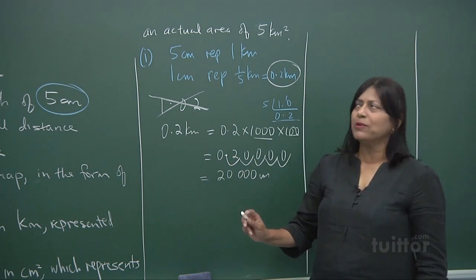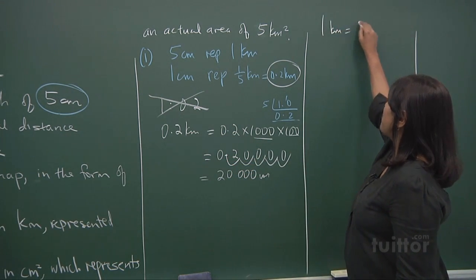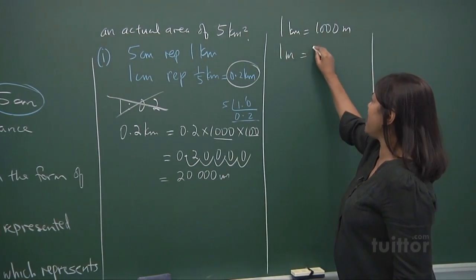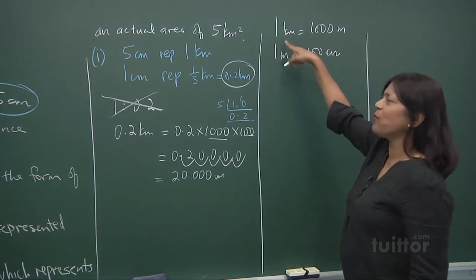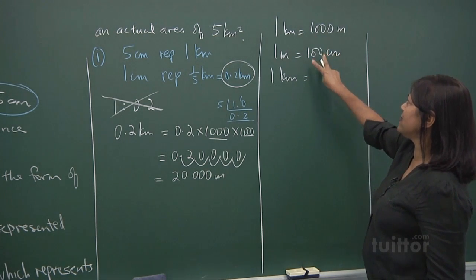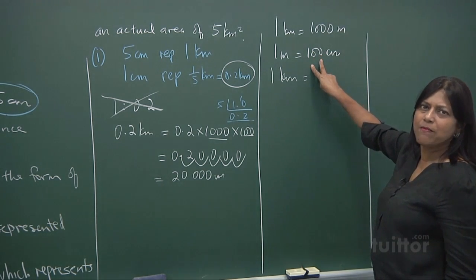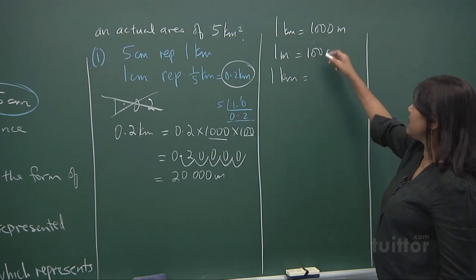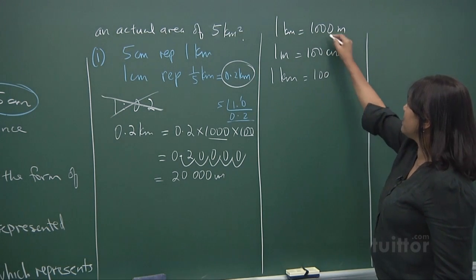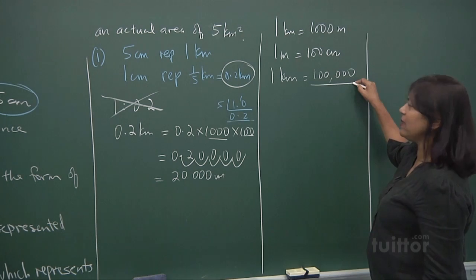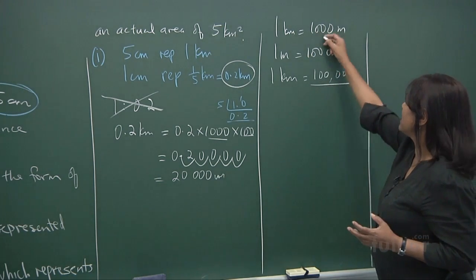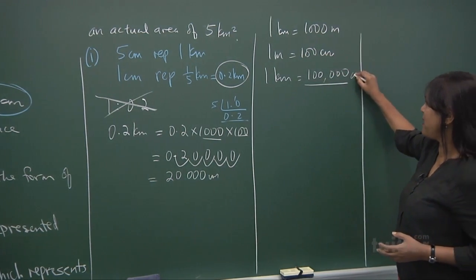Now 1 kilometer, just to take note everybody, 1 kilometer is 1,000 meters, and 1 meter is 100 cm. So if you were to look at 1 kilometer, you want to change it to cm, 1,000 meters times 100. 1,000 meters will be 100,000 cm. If you look at it, 3 zeros, 2 zeros, 5 zeros. This is what you get. 1,000 times 100, 100,000. 3 zeros, 2 zeros, you get 5 zeros, and that's in cm.